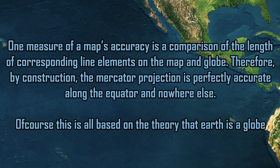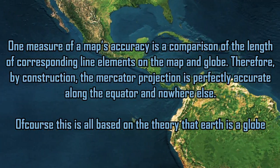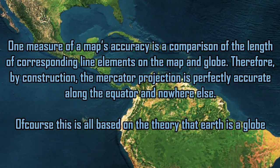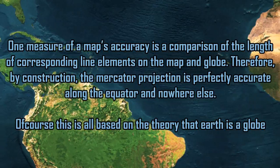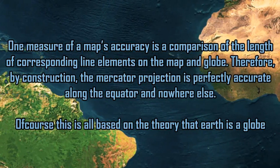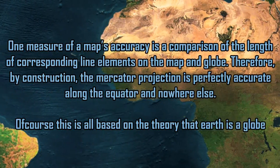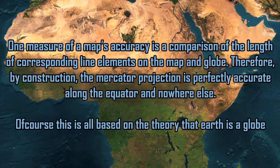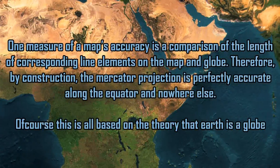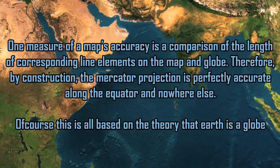One measure of a map's accuracy is a comparison of the length of corresponding line elements on the map and globe. By construction, the Mercator projection is perfectly accurate along the equator and nowhere else.